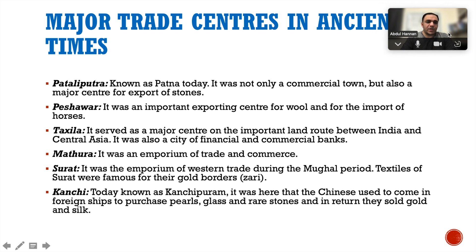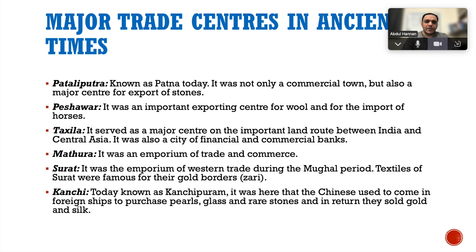Major trade centers in ancient times: Pataliputra, known as Patna today, was not only a commercial town but also a major center for export of stones. Peshawar was an important exporting center for wool and for the import of horses. Taxila served as a major center on the important land route between India and Central Asia and was also a city of financial and commercial banks. Mathura was an emporium of trade and commerce. Surat was the emporium of western trade during the Mughal period — its textiles were famous for their gold borders (Zari). In Kanchi, today known as Kanchipuram, the Chinese used to come in foreign ships to purchase pearls, glass and rare stones; in return they sold gold and silk.